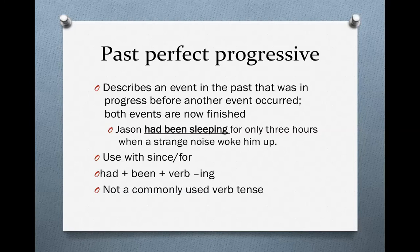The only difference is that these events were in progress in the past. You might be thinking this sounds like the past progressive, and you're right, because the past progressive also describes events that were in progress in the past. The difference between the past progressive and the past perfect progressive is that with the past perfect progressive, you will use since or for.